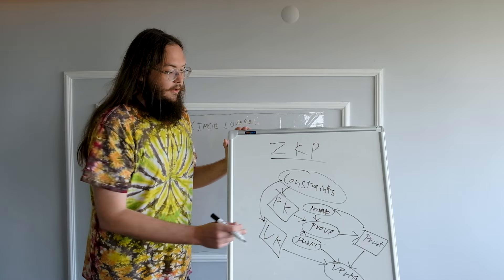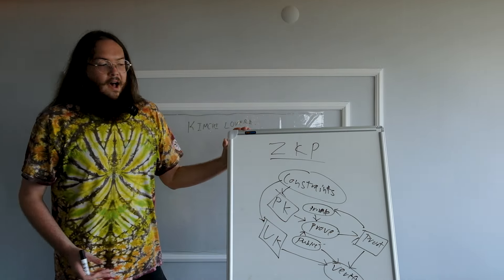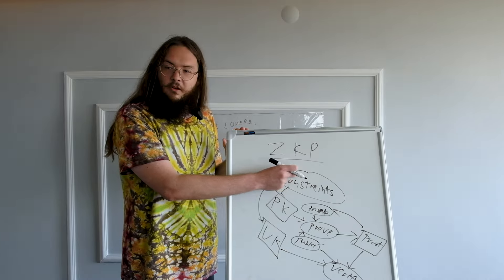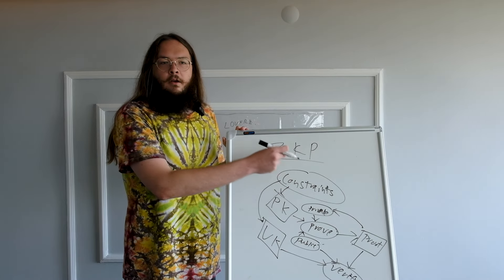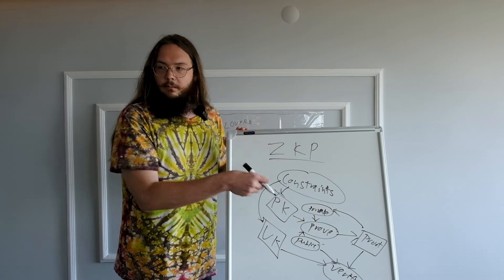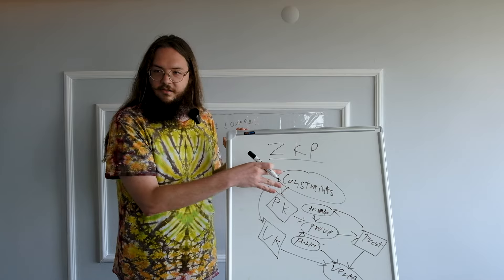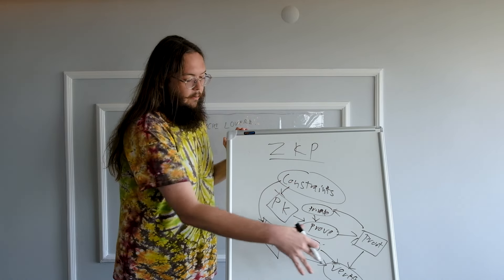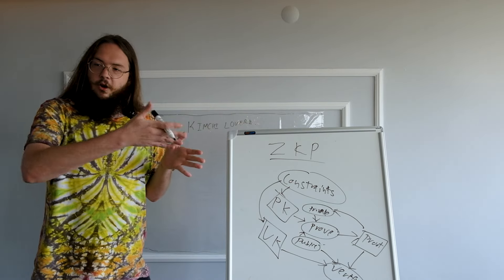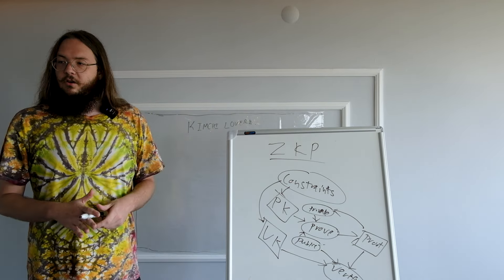At the end, you still have the same small proof, but now you've encapsulated the same constraints run through the program multiple times. You have a static set of constraints, and you keep updating the inputs and recursively proving more and more stuff every generation.